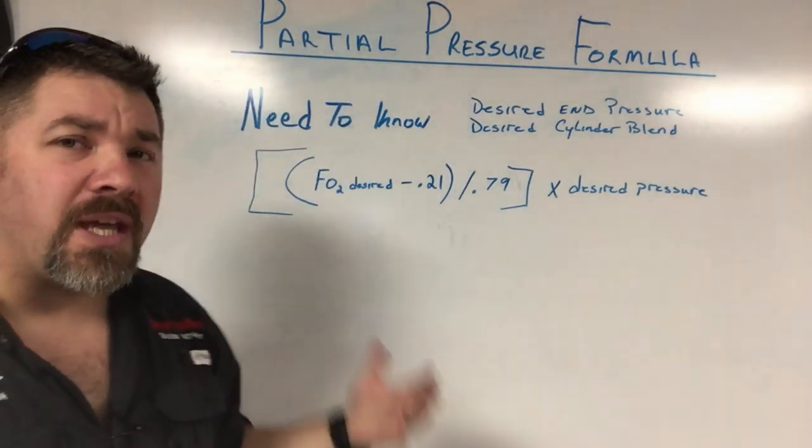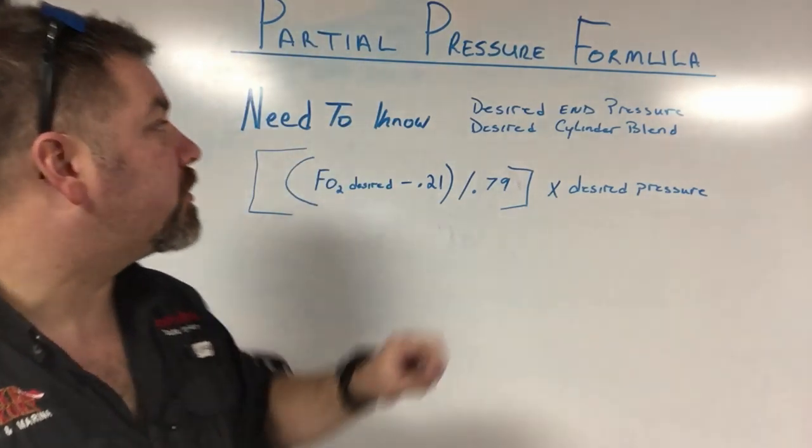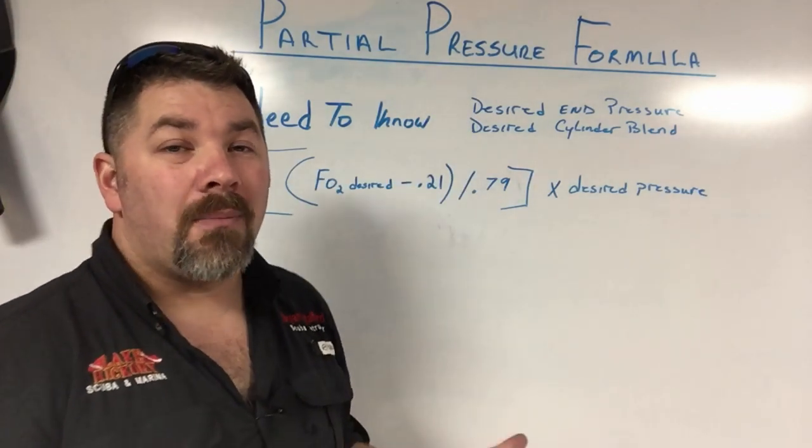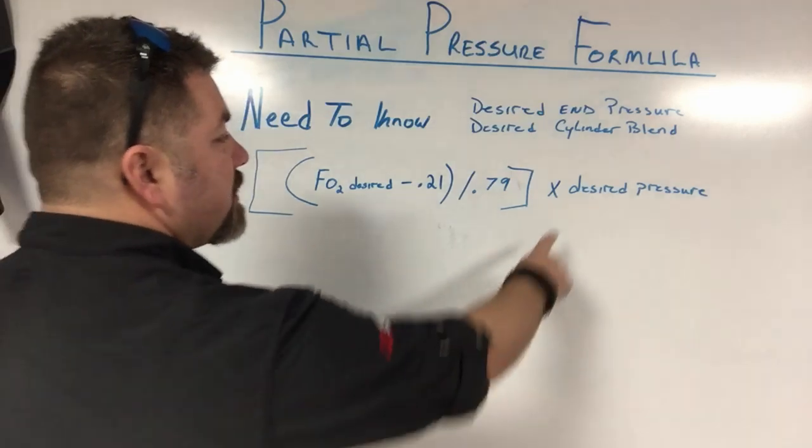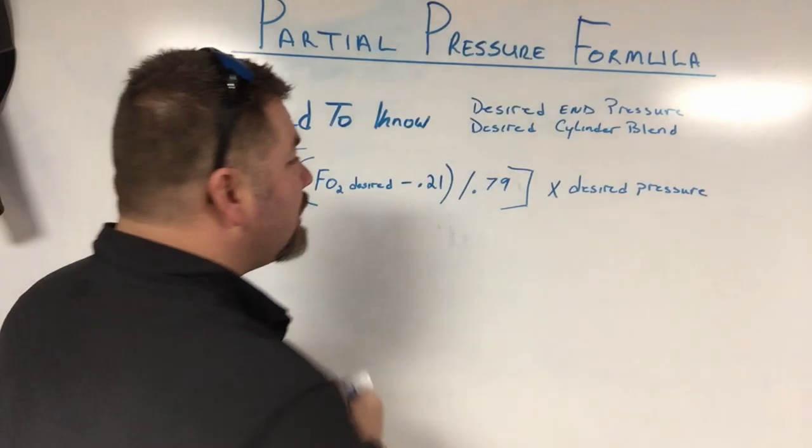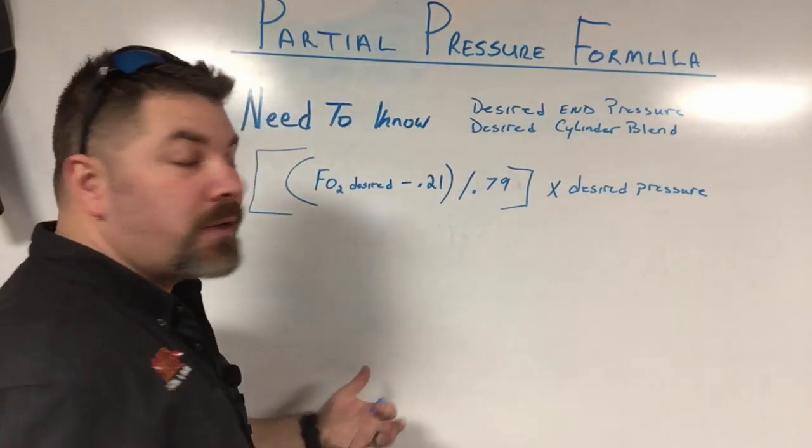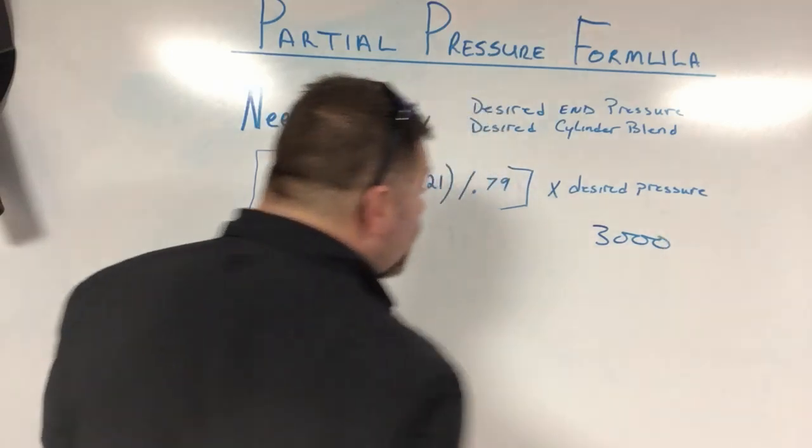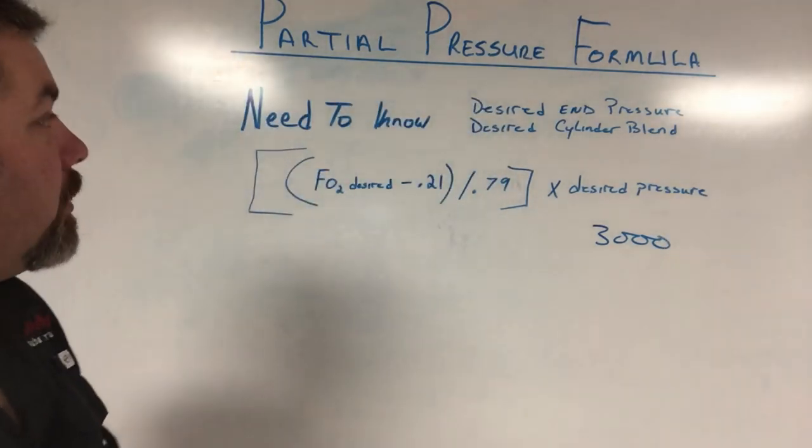Now to do this, there's two things that you need to know. There's two known variables. One, you need to know what your desired ending pressure is. Well, my desired ending pressure is 3000. So in this particular formula here, I'm going to write that down. Now I like to use aluminum 80s and I understand that they're filled to 3000 psi. So I'm going to go ahead and fill in the blanks of any of my known variables as well.